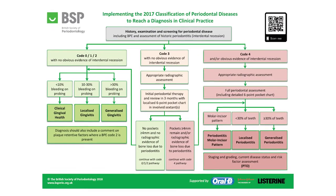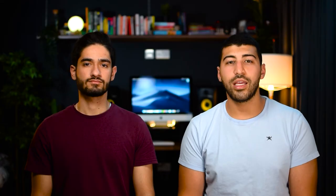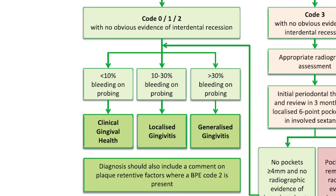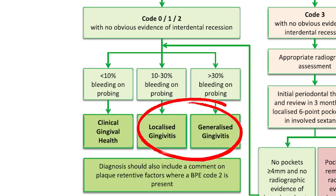Now that you've got a code for each sextant, the British Society of Periodontology have formed an in-depth sheet to follow, and keep in mind that this classification is also used internationally. A BPE score of 0 indicates healthy gums, while 1 and 2 would indicate some level of gingivitis depending on how much bleeding you estimate to have seen.